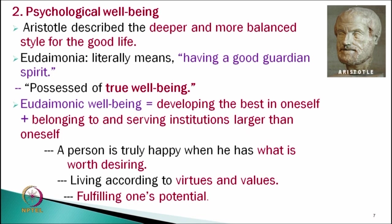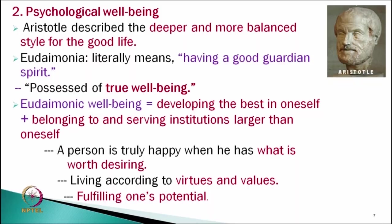The second model focuses on happiness plus meaning in life — the eudaimonic perspective. Aristotle described a deeper, more balanced style for the good life. Eudaimonia literally means having a good guardian spirit. Eudaimonic well-being, or psychological well-being, is developing the best in oneself plus belonging to and serving institutions larger than oneself. A person is truly happy when living according to virtues and values and fulfilling one's potential.